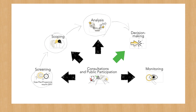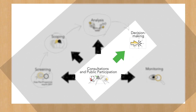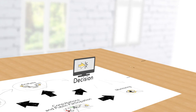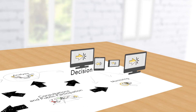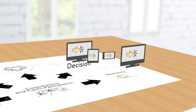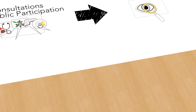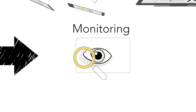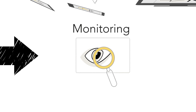The consultation results are not binding, but decision makers have to take into account all opinions before taking a final decision. They must also inform the environmental and health authorities and the public of the final decision taken. Once a decision is taken, it is obligatory to monitor the impacts of the adopted plan or program and to make the results publicly available.